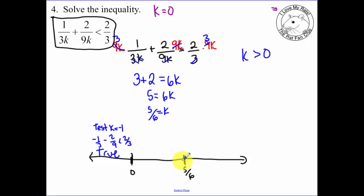Test in between 0 and 5 sixths. I'm going to test k equaling 1 third. Because when I plug in 1 third here for k, I have 3 times 1 third - well, that's 1. So I'm going to have 1 over 1 third times 9, that's going to be 3 plus 2 thirds. Is that less than 2 thirds? That's false. So that's not part of my answer. All these numbers on this piece, not part of our answer.